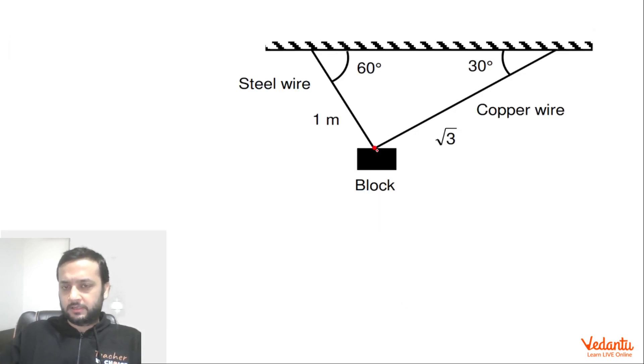If we balance the forces on this point, so mg is going to act over here, let's say the tension in the copper wire will be Tc and tension in the steel wire is Ts. Now this angle we can say will be 150 degrees because this will be 60 coordinate angles, so this will be 90, so total will be 150. Similarly this angle will be 120 degrees and this is 90.